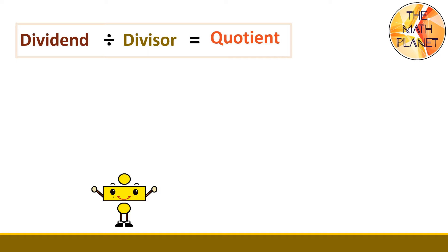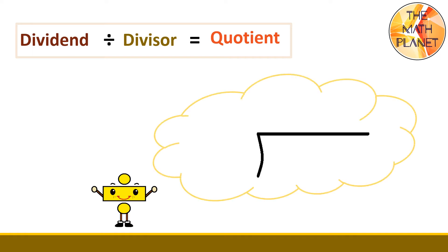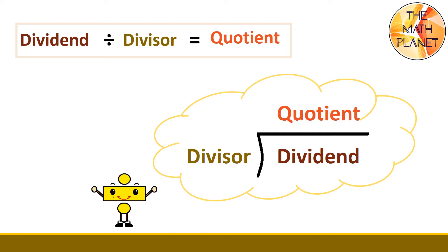When dividing multi-digit numbers, we use long division. Long division breaks down a division problem into a series of easier steps. This is the symbol for long division. We put the dividend under the long horizontal line, then we put the divisor out in front of the curved part of the division symbol. Next, we write the quotient up above the horizontal line.